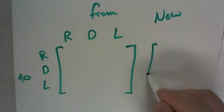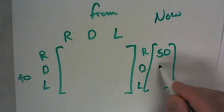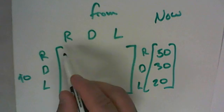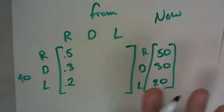That is what's going on right now. We have Republican, Democratic, and Libertarian — 50% vote Republican, 30% vote Democratic, and 20% vote Libertarian. Then from one election to the next, 50% of the people who vote Republican still vote Republican — I'll represent that as a decimal. From Republican to Republican is 50%, then 30% change and vote Democratic, and 20% go to the Libertarian Party.